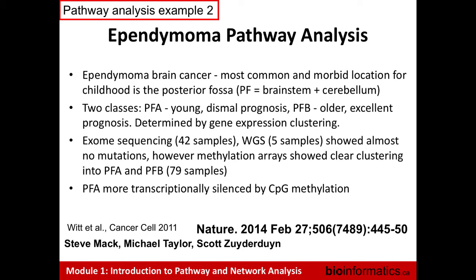The second example is an analysis of ependymoma, a brain cancer and the third most common brain tumor in children, affecting the lining of the central nervous system. For many years, the only known therapy was radiation and surgery, which is devastating because it affects young children and brain surgery leads to a poor quality of life. The only thing people knew about this disease was that depending on where it occurred in the brain, it would have different outcomes — the most serious being if the tumor appeared in the posterior fossa, the back of the head including the brain stem and cerebellum.